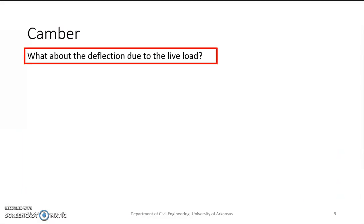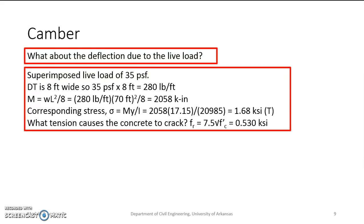So what about if we have live load on it? Well, the problem says there's a superimposed live load of 35 pounds per square foot. Double T once again is 8 feet wide. So we multiply 8 times 35 and we get 280 pounds per linear foot. Now, I want to calculate the stress due to this load. So it's simply supported, uniformly distributed load - the moment is WL squared over 8. So I do some conversions and you end up with 2,058 kip inches. Well, that's a corresponding stress. So stress is equal to My over I. This is the Y bottom. I get 1.68 ksi in tension.